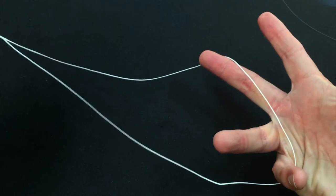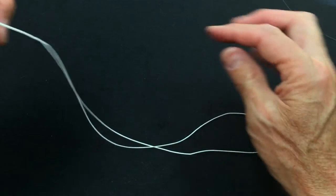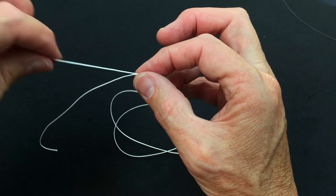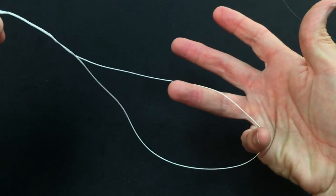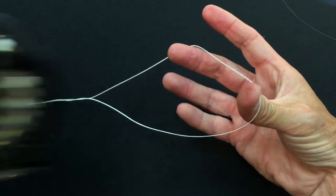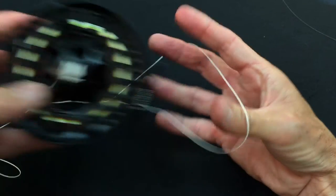Now you've got a very large loop on this end. This loop is obviously too large. You want the loop about the size of the reel, so you take the non-tag end and just pull that, and that just adjusts this loop until you get to the size you want. It wants to be about the size of a reel, big enough you can get a reel into that. So that looks like about the right size to me.